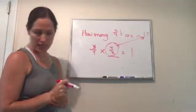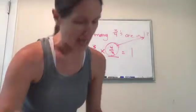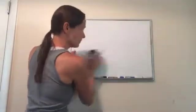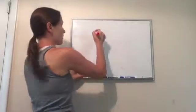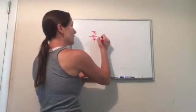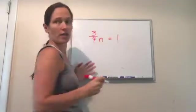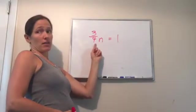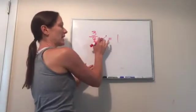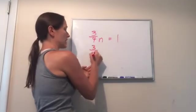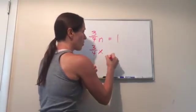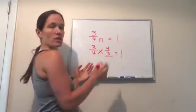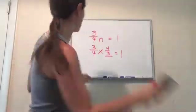All right, last problem, and this is just a quick review as well. Three-fourths times n equals one. What does that mean when you see those n? That times what, right? So when it's next to a letter it means this: three-fourths times what equals one? And we know that would be four-thirds because it needs a reciprocal. That is lesson nine.